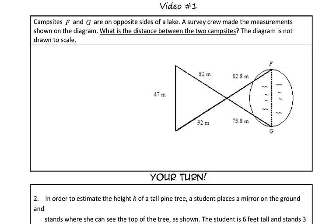Starting off with this problem, we are told that campsites F and G are on opposite sides of a lake. A survey crew made the measurements shown in the diagram. What is the distance between the two campsites? Something that you're not told is that these triangles are similar triangles.